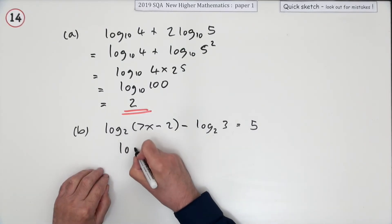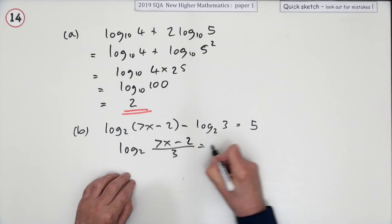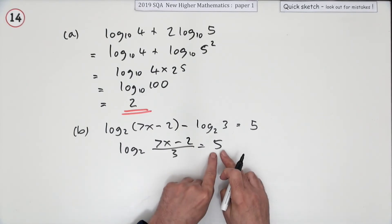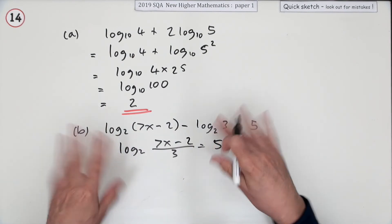7x minus 2 upon 3. Now how do you solve that? You need to get rid of this log base 2. You could either reconstruct that as log base 2 of something and then just dispose of the logs, or you could apply the inverse.